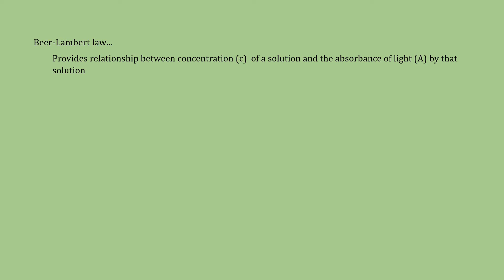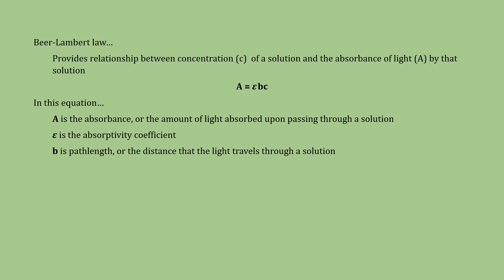Beer's Law is a relationship between concentration and the absorbance of light. In fact, we can write the Beer-Lambert Law as an equation to illustrate this relationship. In this equation, A is the absorbance of light, that is, the amount of light that's absorbed upon passing through a solution. Epsilon is the absorptivity coefficient, and it reflects how well a substance absorbs light at a given wavelength. B is path length. It represents the distance that light travels through the solution. Typically, it's one centimeter.